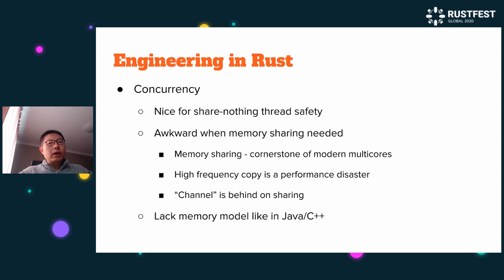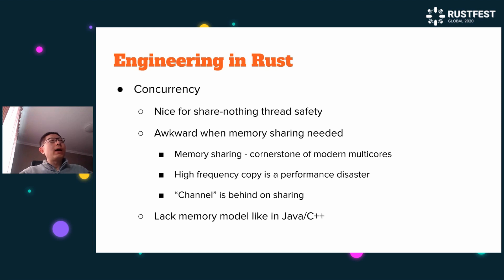Concurrency is a great strength with fearless concurrency in Rust. It's nice for shared-state thread safety in Rust. But it can be a little awkward when unsafe memory is needed. There are many reasons unsafe memory is needed. The main reason is Rust lacks memory models like those in Java and C++.